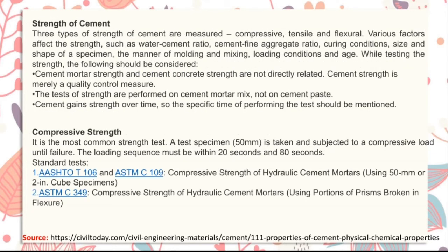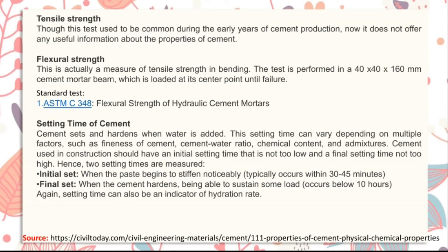Strength of cement: three types of strength are measured — compressive, tensile, and flexural. For compressive strength, a 50 mm test specimen is subjected to a compressive load until failure; the loading sequence must be within 20 to 80 seconds. Tensile strength testing was common in early cement production but no longer provides useful information. Flexural strength is a measure of tensile strength in bending; the test is performed on a 40×40×160 mm cement mortar beam loaded at its center point until failure.